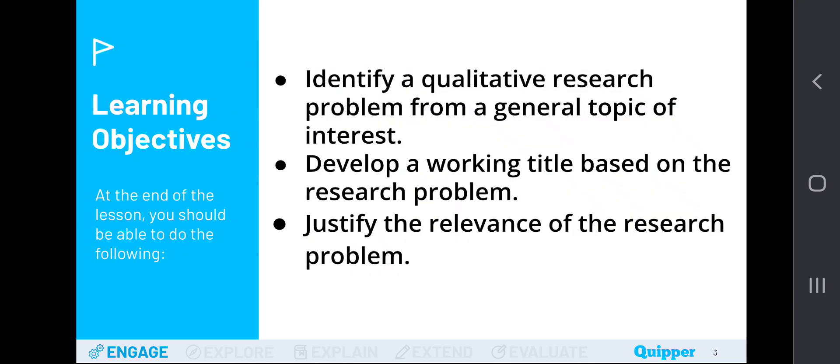Now, for this lesson, we need to target the following learning objectives. First, we need to identify a qualitative research problem from a general topic of interest. Second, we need to develop a working title based on the research problem. And third, we need to justify the relevance of the research problem. Now, let's go through these discussions and keeping in mind the objectives that we need to attain or we need to achieve.